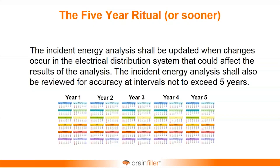In NFPA 70E, as many of you know, you're required to go back and revisit the labels, the analysis, the study at intervals not to exceed five years, or if there's any significant change that could affect the results. I look at 'affecting the results' as meaning could it affect the PPE that you wear, or maybe the arc flash boundary — where perhaps that may need to be increased. If it decreases, don't worry about it. But if it increases, that would affect your practices.